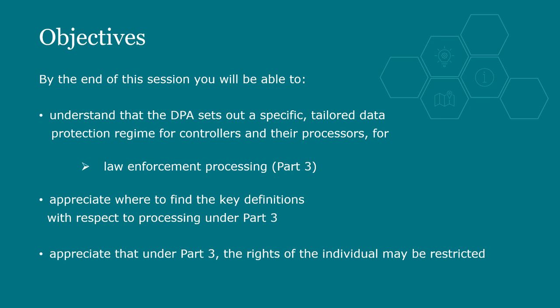By the end of this session, you will be able to understand that the DPA sets out a specific, tailored data protection regime for controllers and their processors for law enforcement processing. You will also appreciate where to find the key definitions with respect to processing under Part 3, and appreciate that under Part 3 the rights of the individual may be restricted. This session is intended to introduce the general requirements of Part 3. You will need to refer to the guidance for more information.